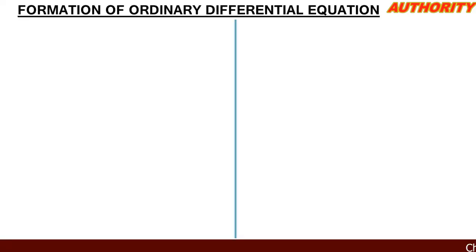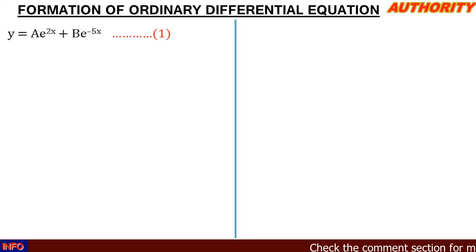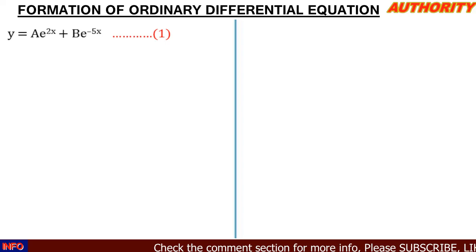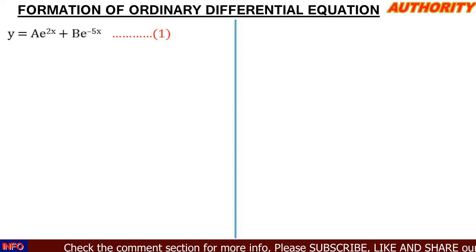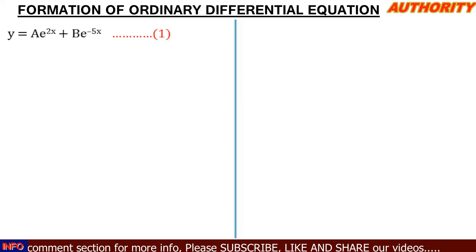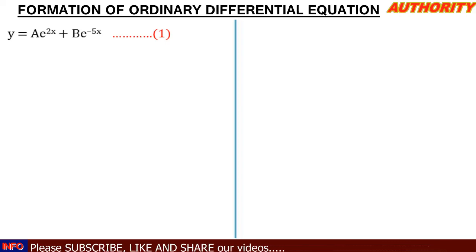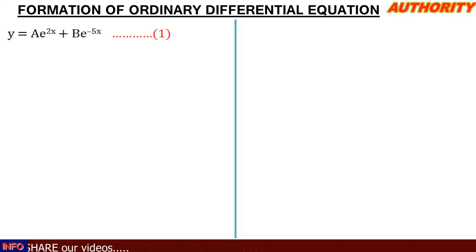Alright, welcome again. Let's take a look at this question. We are asked to form a differential equation corresponding to y = ae^(2x) + be^(-5x). We form a differential equation by eliminating the arbitrary constants, and how many arbitrary constants are involved determines how many times you differentiate. Looking at this function, we have two arbitrary constants, a and b, so we are going to differentiate this function twice, then manipulate and eliminate the arbitrary constants.